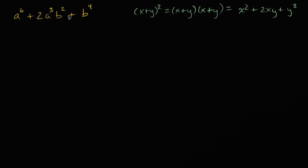When you write it like this, you see there might be a parallel. This a to the sixth term looks like it might parallel the x squared term, and this b to the fourth might parallel the y squared. If I have something squared here and that something in this middle term, and something squared here with that something in the middle term, and then I have a two — well then that means this thing is a perfect square: it's x plus y squared.